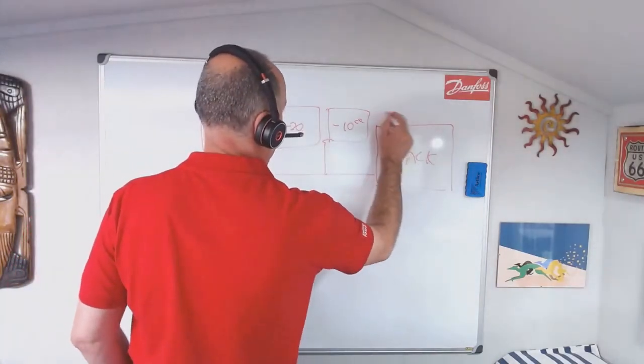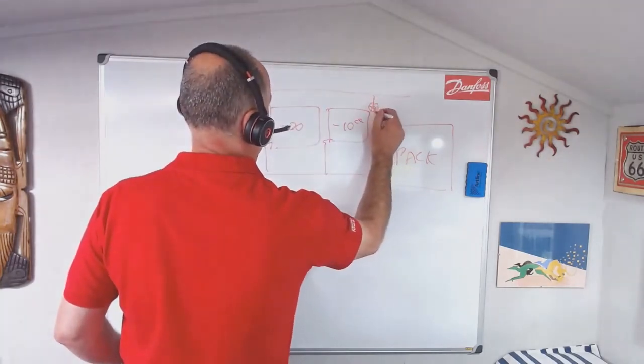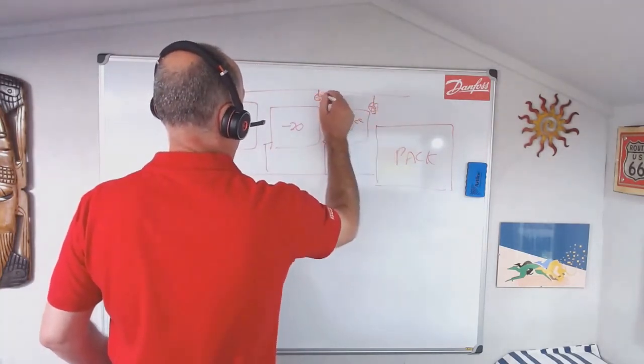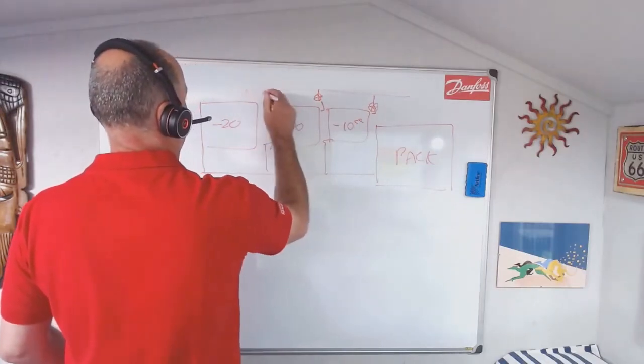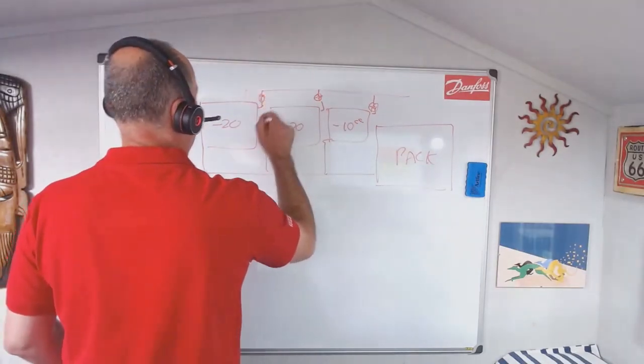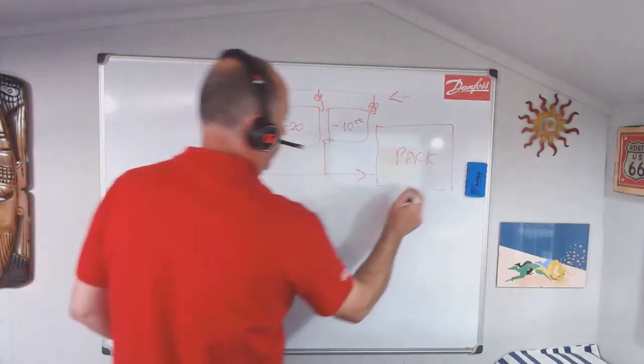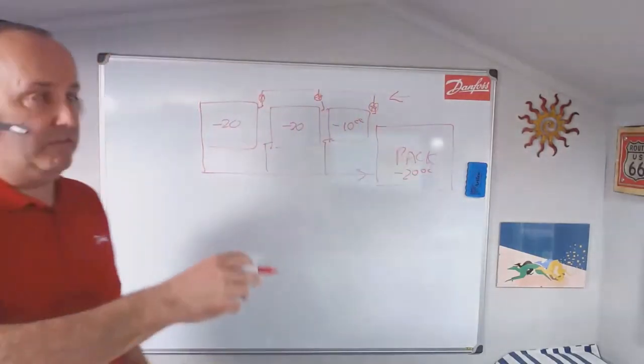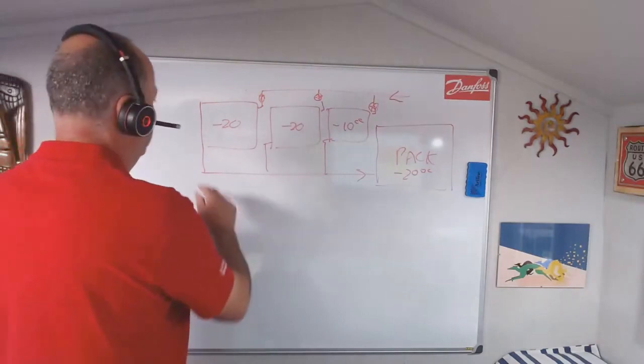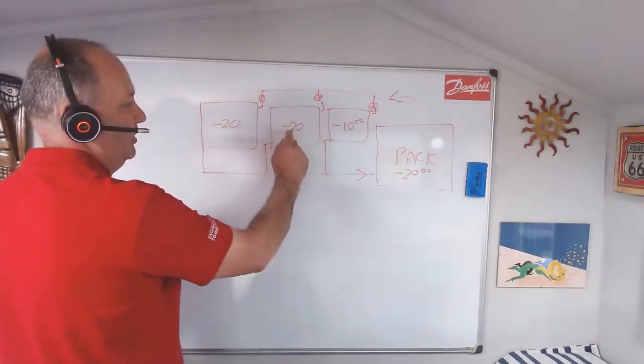Obviously, we've got our common liquid with our TXV feeding the evaporators. That one's gone a bit too far. So we've got the liquid in and we've got our suction back to the pack. Now, the pack's working at minus 20, evaporating temperature. So that one's going to evaporate minus 20. That one's going to evaporate at minus 20.